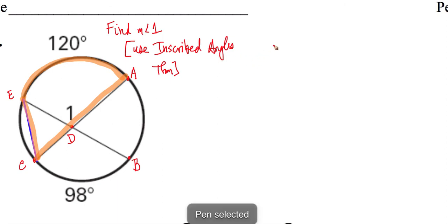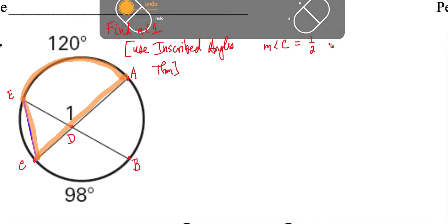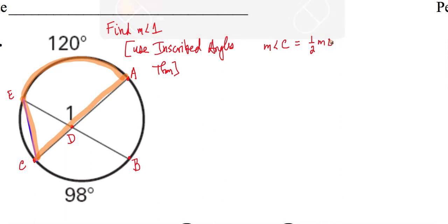So that's going to help us quite a bit. So we know that the measure of angle C is going to be equal to one-half the measure of arc EA. The measure of arc EA. And that's equal to one-half of 120, so that's 60 degrees. So this angle in here is 60 degrees.